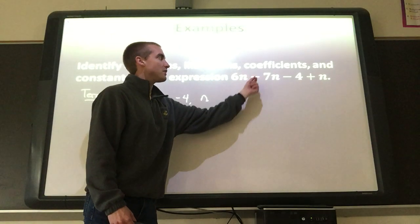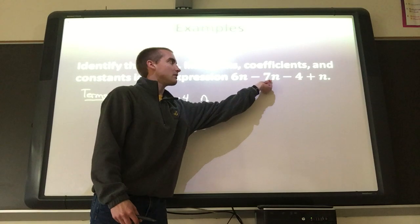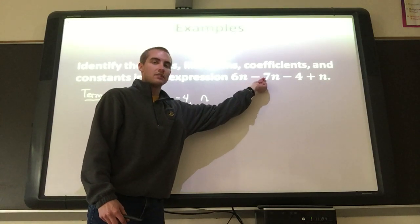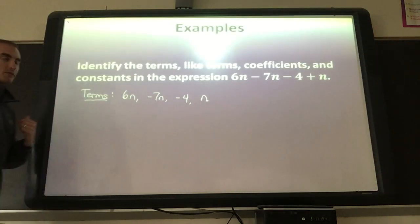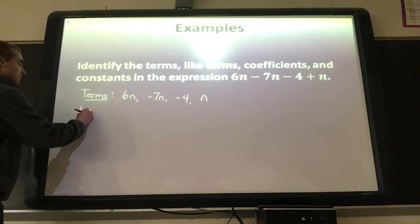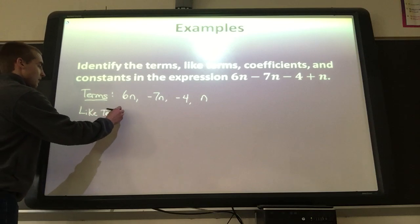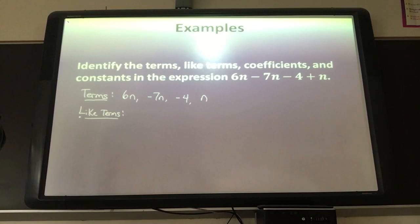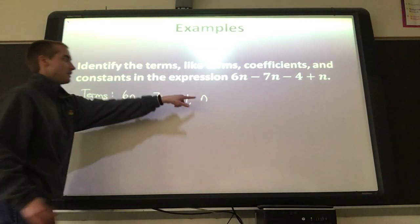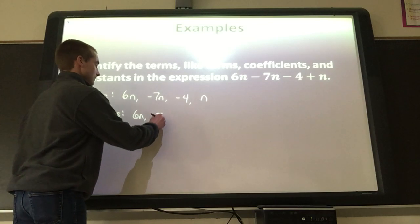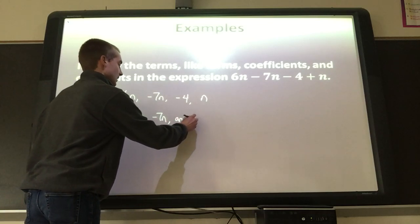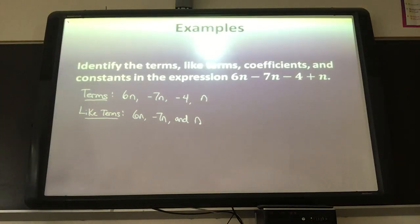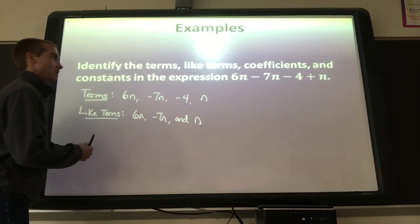If there's a minus sign in front of it, that minus sign goes along with the term after it — so minus 7n, minus 4. Now for like terms: remember, like terms have the same variable to the same power or the same exponent. There are three like terms in this expression. We've got 6n, negative 7n, and n — those are all like terms because they all have an n with no exponent.